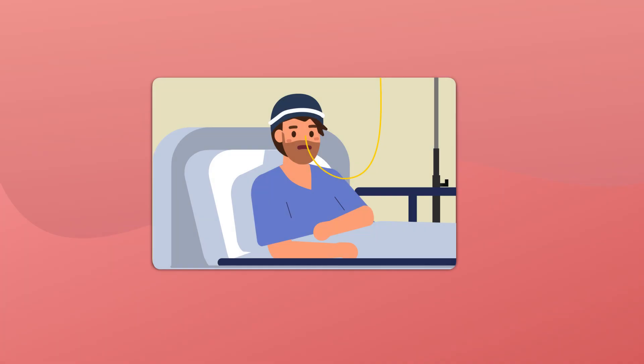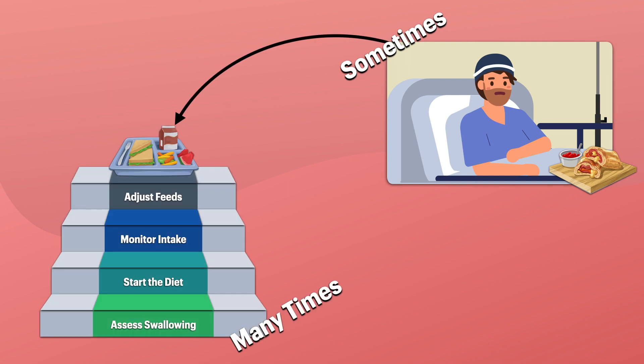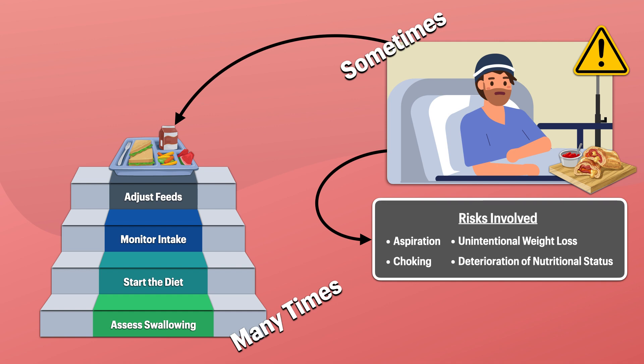In a perfect world, somebody would immediately remove the feeding tube and Frank would resume his usual diet. Although this happens sometimes, many times there needs to be a transitional period in which the patient's ability to safely swallow, eat, and drink is closely evaluated. Rushing the removal of a feeding tube can put the patient at risk of aspiration, choking, unintentional weight loss, and deterioration of their nutritional status if they suffer from dysphagia or common symptoms like anorexia and early satiety.